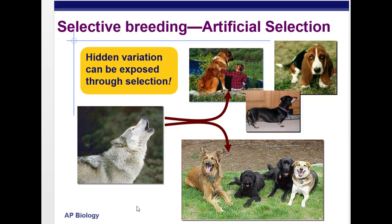Going to artificial selection: at the time in England, breeds of dogs were the craze — even the queen herself was into dogs. He saw how humans could choose traits and come up with new breeds, and he thought: couldn't nature do the same? Couldn't different forces acting on organisms cause changes in species, just like humans cause changes in dog breeds?